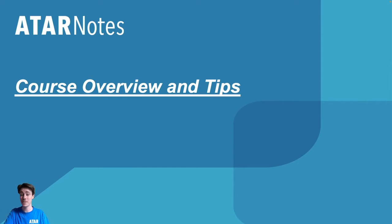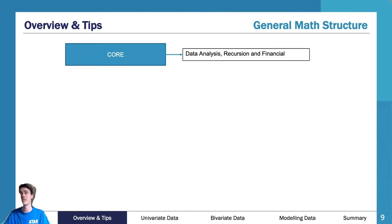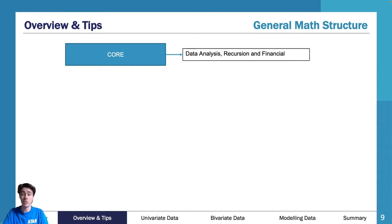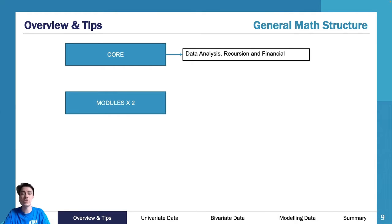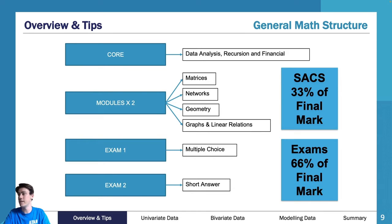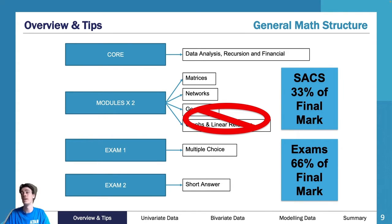Let's go through some course overview and tips on the structure of General Maths. Although this is now your second year of General Maths in the new study design, many of you probably have older resources from siblings, friends, or teachers. There are subtle changes to this study design that have changed in the last 24 months. Last year was the first year; this year is the second. What changed is we used to have four modules to choose from, but now VCAA chooses two for you.